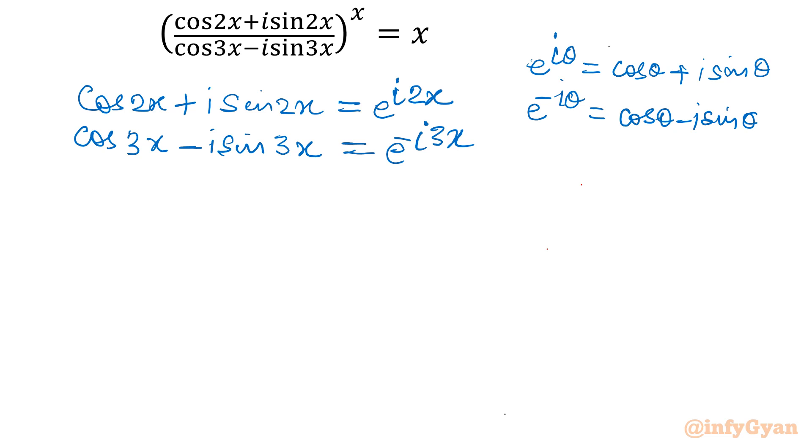Our given equation will convert now: e raised to the power i 2x over e raised to the power minus i 3x whole power x equal to x. Now exponent property will come into the picture, that is a raised to the power x over a raised to the power y equals a raised to the power x minus y.